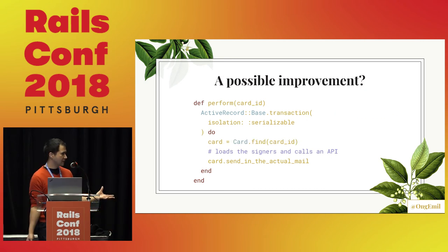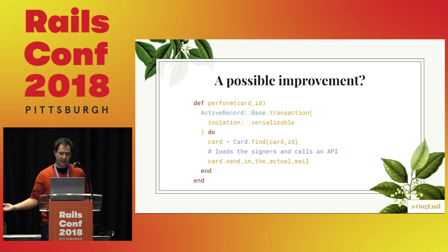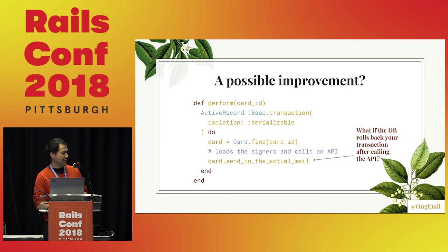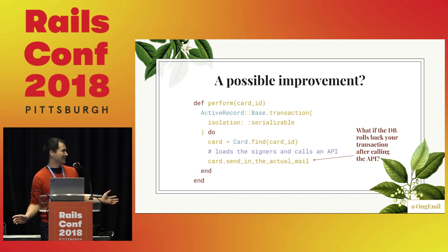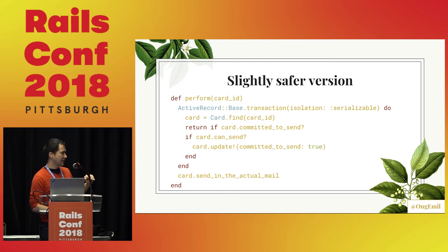One thing we can do to improve that — unfortunately we can't let Active Job get the card for us — but it's not too bad. We can introduce an additional line, pass in the card ID to perform the job later, and then grab it within the transaction. Now the database knows we're using this for our logic. But there's still a problem: what if we sent a card in the actual mail and then the database told us 'hey, you shouldn't have done that'? Somebody's going to have to go digging through the post box, and that's not great.